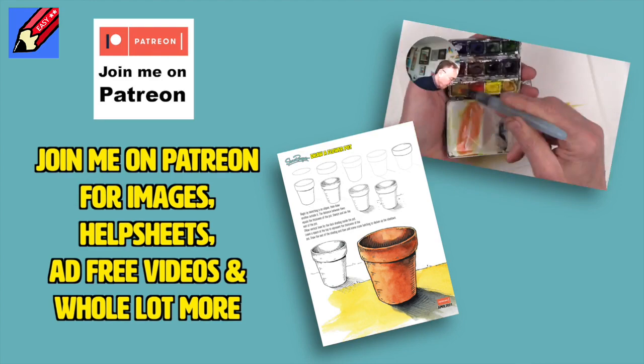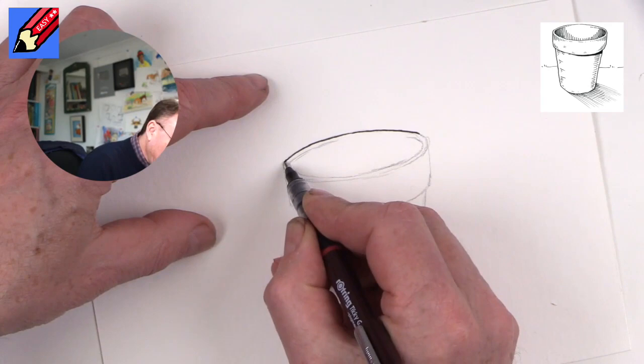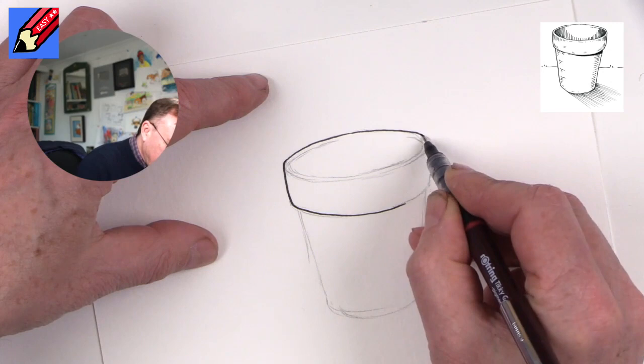I'm going to start by drawing around this outside here and then down and around the bottom of this. So this is kind of the shoulder of the flower pot.